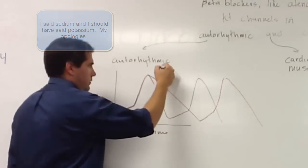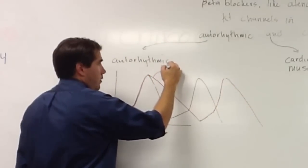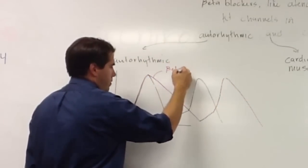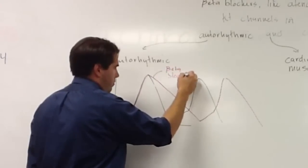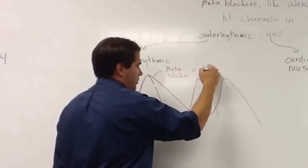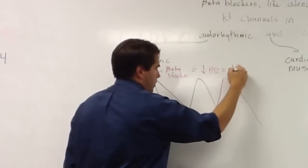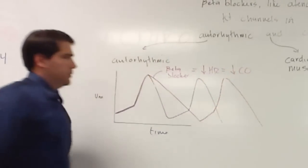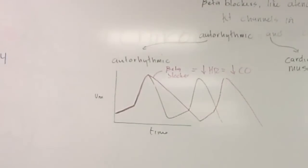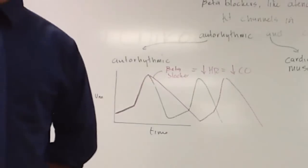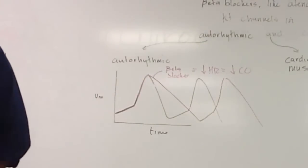So the overall result is you're going to decrease heart rate, which will decrease cardiac output. Now we haven't talked about cardiac output yet, but we're going to draw that graph up. And I would like all of your cardiac drugs to end on how does it affect cardiac output. So really the last two words in every one of your drug answers should be cardiac output.